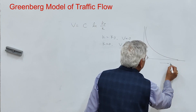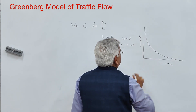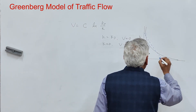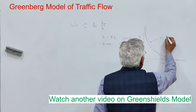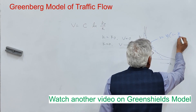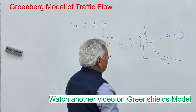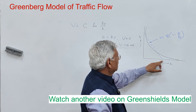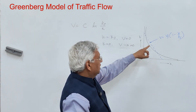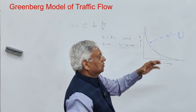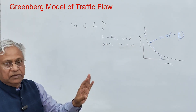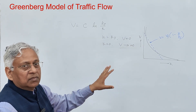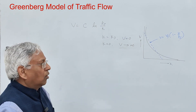On the speed-density graph, this is the density axis and this is the space mean speed axis. In the Greenshields equation, v equals vf times (1 minus k/kj), both boundary conditions are satisfied: when density is zero, speed is free-flow speed, and when density is maximum, speed is zero. But in the Greenberg model, speed becomes infinite when k tends to zero — there is no vehicle, yet speed is infinite. That is why the Greenberg model is not suitable for low traffic volume conditions.